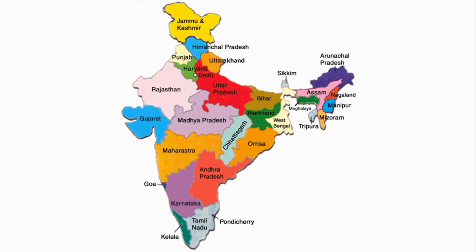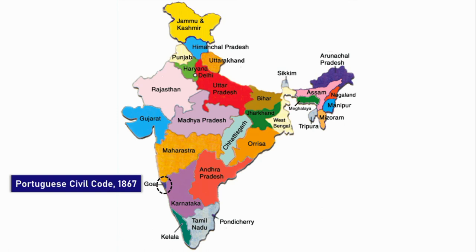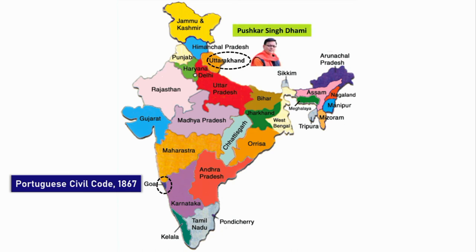At present, Goa is the only Indian state with a Uniform Civil Code, since 1867, following the Portuguese civil code. If you want to know more about Uniform Civil Code in Goa, let me know in the comment section and we'll discuss it in detail. Apart from Goa, Uttarakhand has also come forward to take steps towards Uniform Civil Code. Uttarakhand CM Pushkar Singh Dhami approved and, in March 2022, constituted a committee headed by a retired Supreme Court judge to implement Uniform Civil Code. So probably in Uttarakhand, there will be a Uniform Civil Code soon.